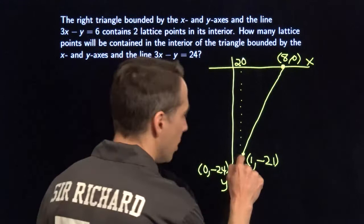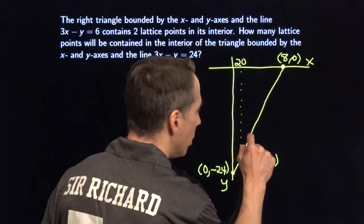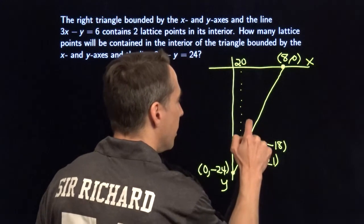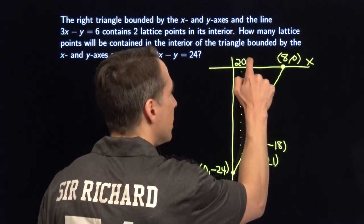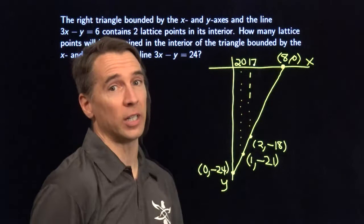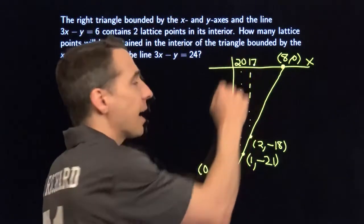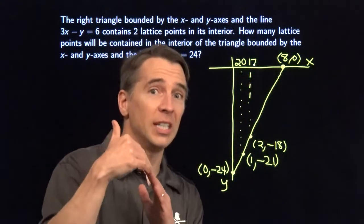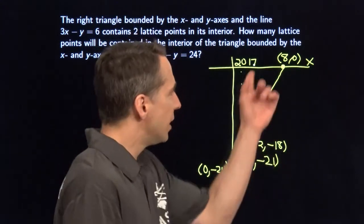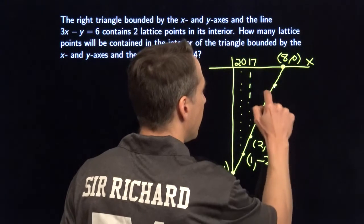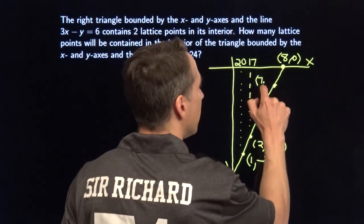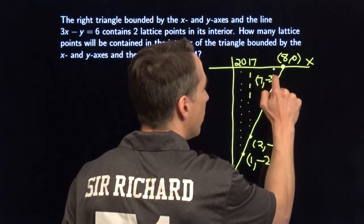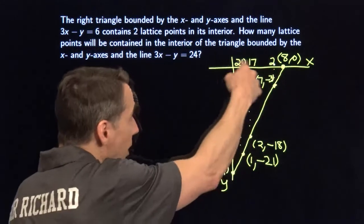Now we can just keep doing this. We go over 1 more, up 3 more, and we get to the point 2, negative 18. And now we have 17 more lattice points inside this right triangle. We just keep going — there will be 3 fewer each time because we're going over 1 and up 3. So after 17, we'll have 14, then 11, then 8, then 5. And right at the end here, this last point at 7, negative 3 — then we'll have 2 lattice points above that inside the triangle. Now we just have to add all these up.